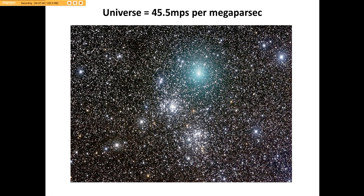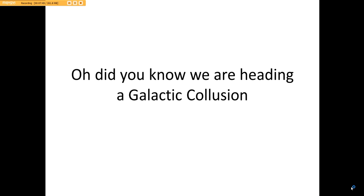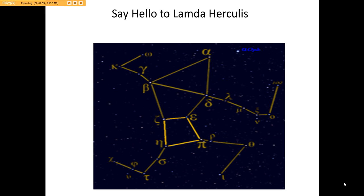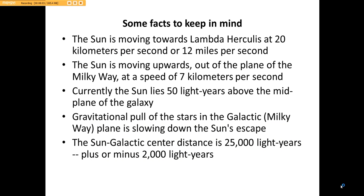I bet you're asking yourself, what is a megaparsec? Good question. A megaparsec is equal to 3.26 million light years, which one light year is equal to 6 trillion miles. We'll get into more of that. So, let's wrap our head around all this. Earth, sun, galaxy, universe. It's going to be a test. Oh, did you know we're heading for a galactic collision? Bet you didn't know that. Say hello to Lambda Hercules. That's where we're headed.